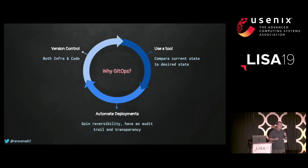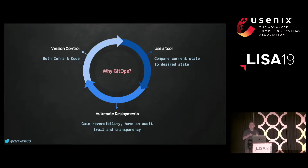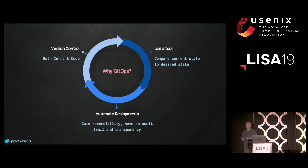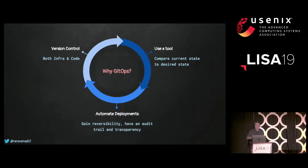So why do you want GitOps? I came up with three reasons. First, people want a tool that shows current state and desired state, and allows you to convert something into a desired state. Second, they want version control — to track when something changed, who changed it, and exactly what line they changed, all the things you can do with Git. And third, they want to automate deployments, which helps with visibility of what happens in the infrastructure and allows you to revert changes and maintain transparency across an organization.